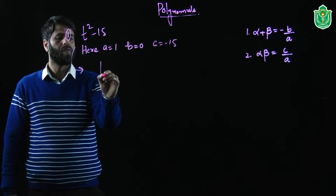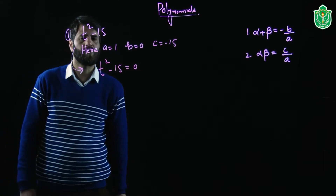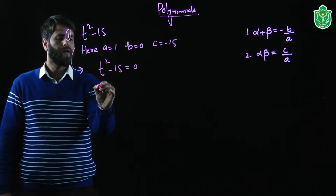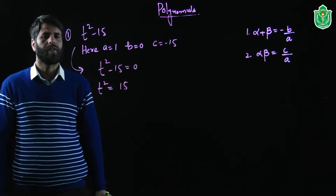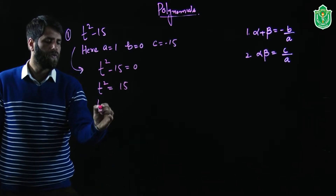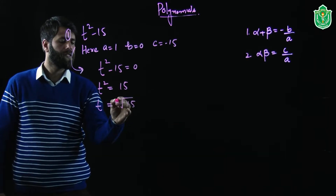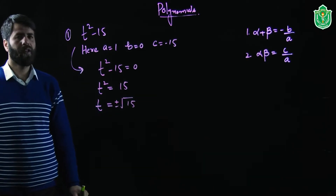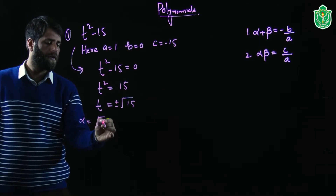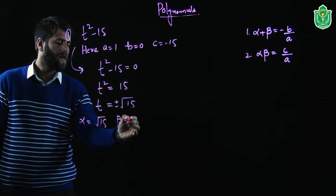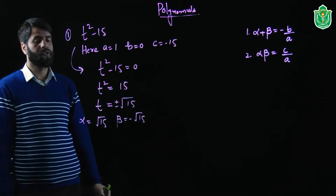As far as the zeros are concerned, we will put that polynomial equal to 0: t squared minus 15 equals 0, or t squared equals 15. On solving we get t is equal to plus or minus root 15. So we can take alpha as root 15 and beta as minus root 15.